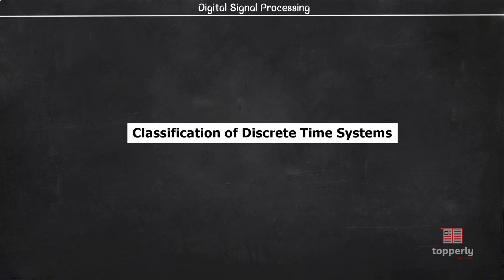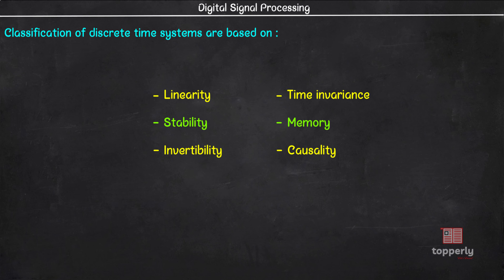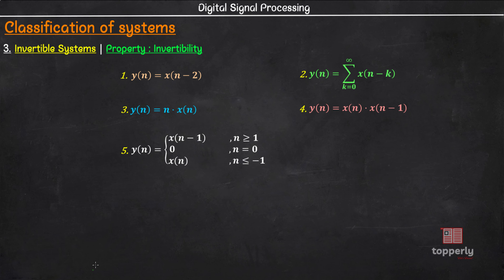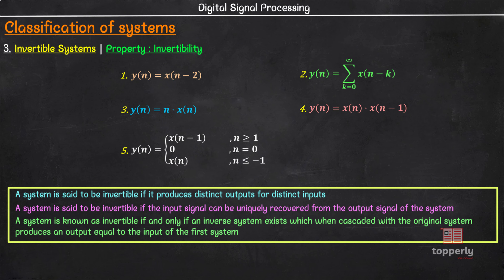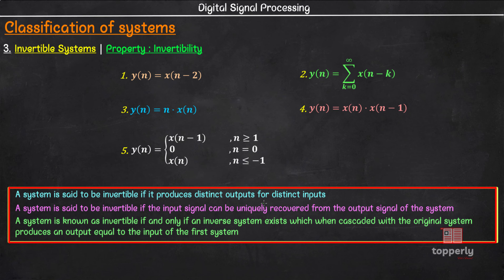Hey everyone, welcome back to DSP lectures. We have defined invertible systems in the last video and also saw some solved examples on the topic. In this lecture, we will explore the property of invertibility for the following systems. We will not be going through the theory again as it was already covered in detail in the last video. So those who need a quick revision, please pause the video here and go through the definition once again. So let us start our lecture.